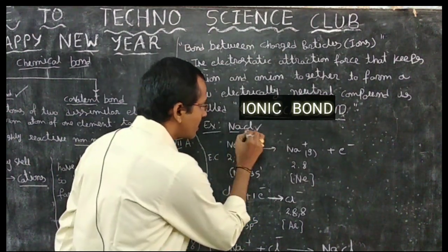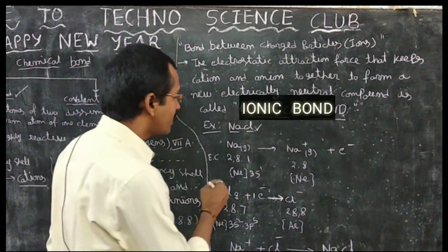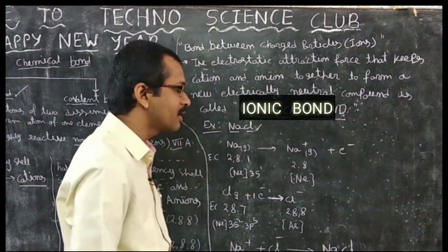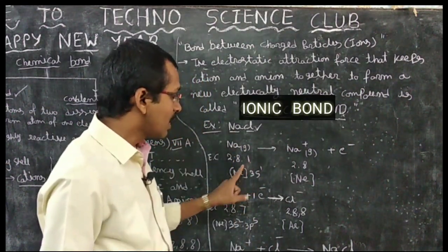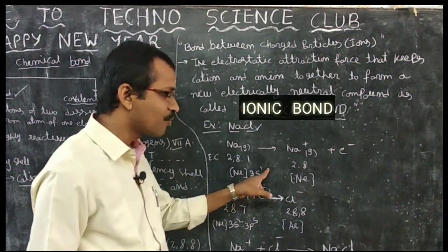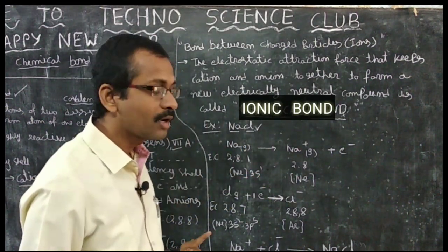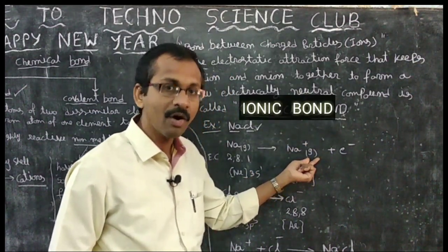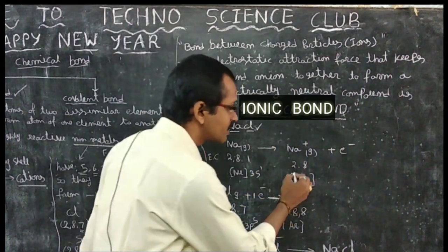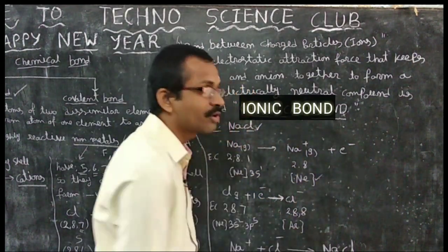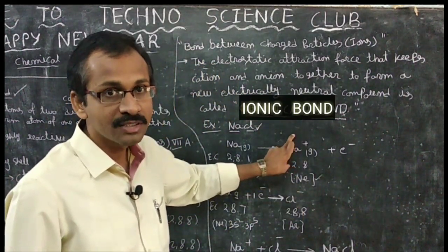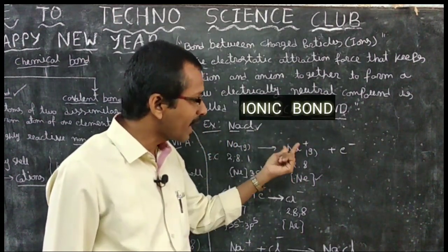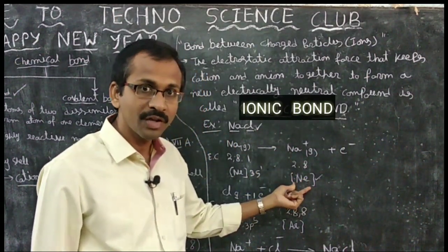In sodium chloride, there are sodium and chlorine atoms. The sodium atom has an electronic configuration of 2, 8, 1 — it has one extra electron in the valency shell, with the configuration Ne 3S1 in gaseous state. So it loses one electron and forms the Na+ gaseous cation. Na+ has the electronic configuration 2, 8, similar to neon's stable electronic configuration. So sodium loses one electron, forms a cation, and gets the stable electronic configuration of neon.